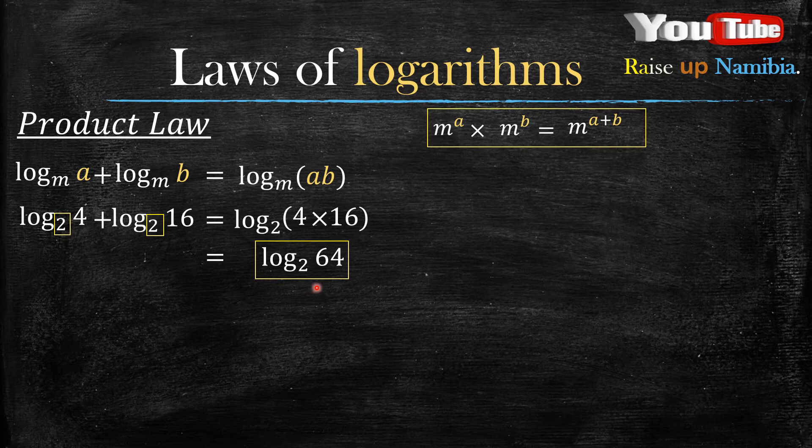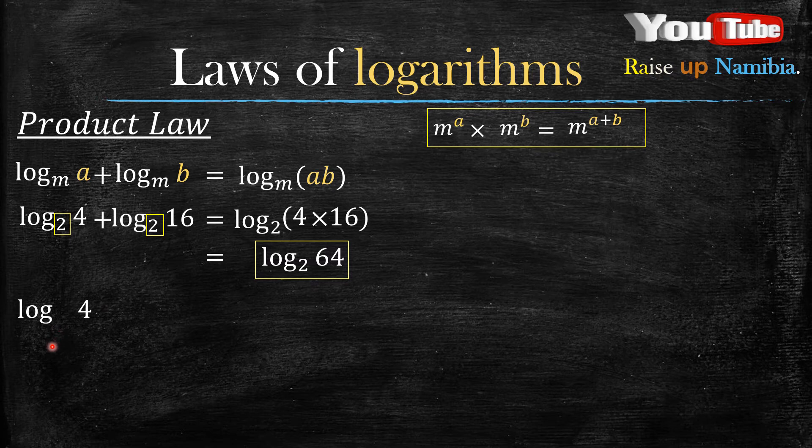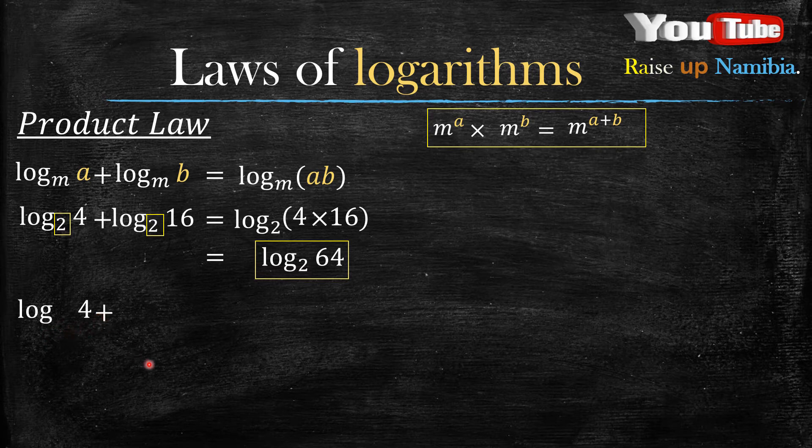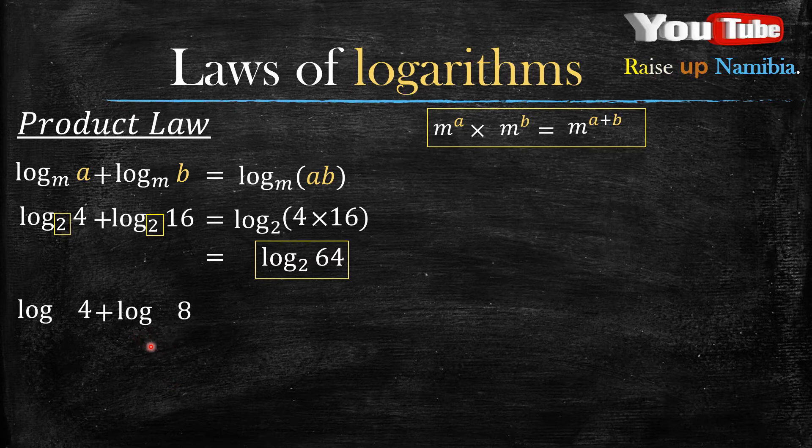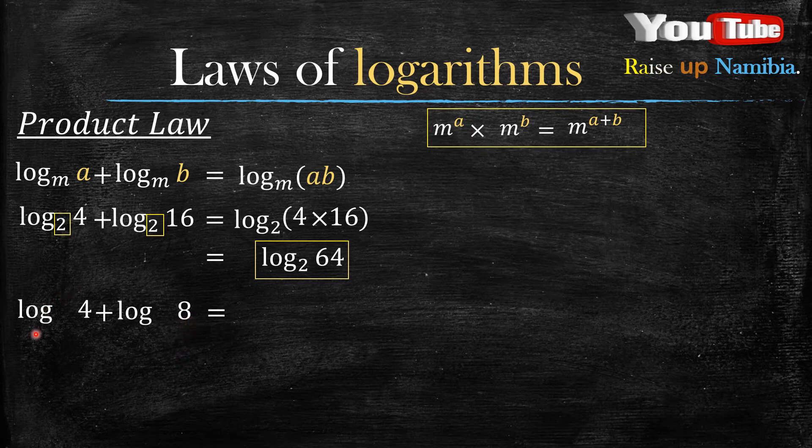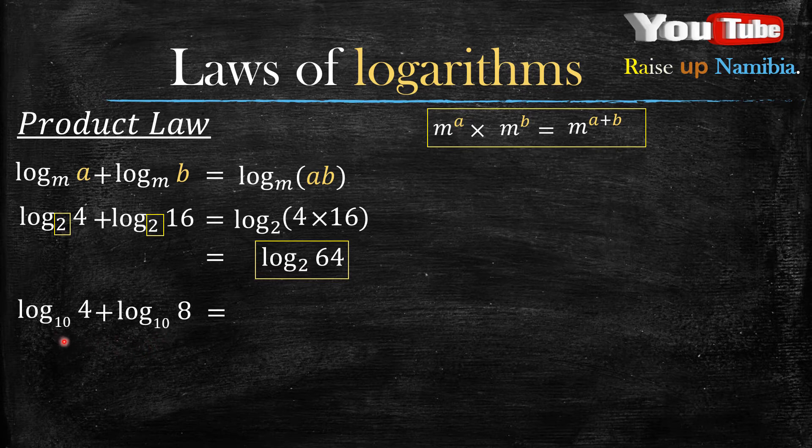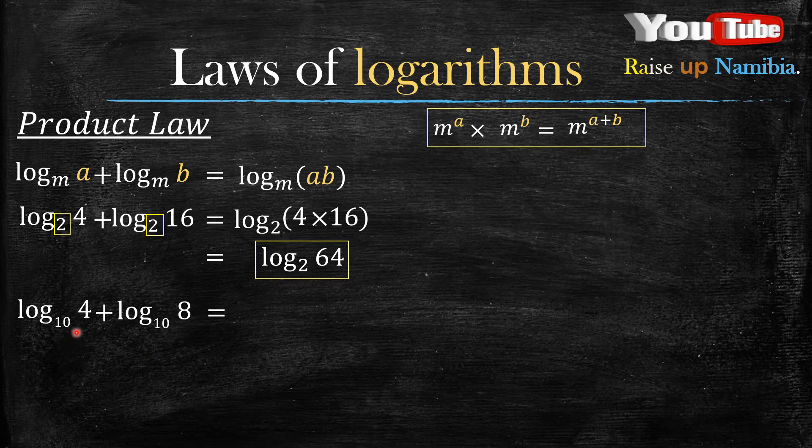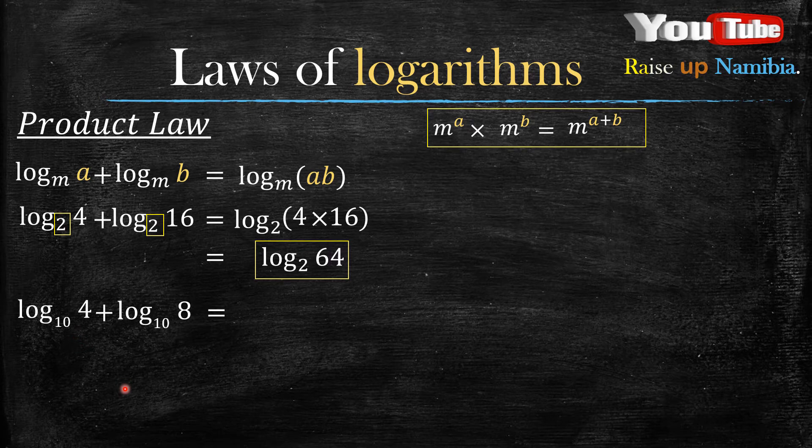Let's look at another example. How about when you have log of 4 plus another log of 8, with no base written? This is what we call common logarithms, which means in each case that you see there is no base written, the base is 10.